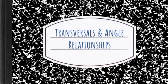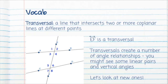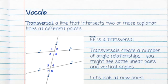This lesson is going to talk about transversals and angle relationships. A transversal is a line that intersects two or more coplanar lines at different points. So line EF is a transversal — it intersects lines AB and CD. Transversals create a number of angle relationships. Here you can see there are eight angles formed by the intersections of these lines.